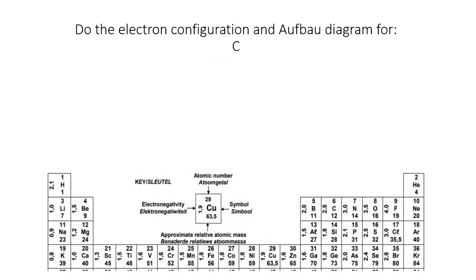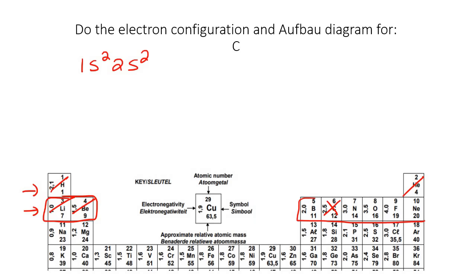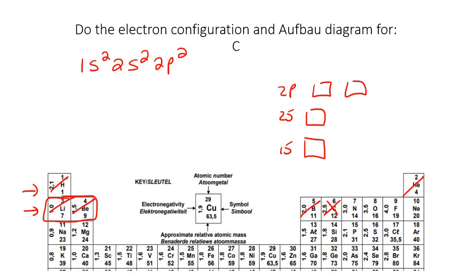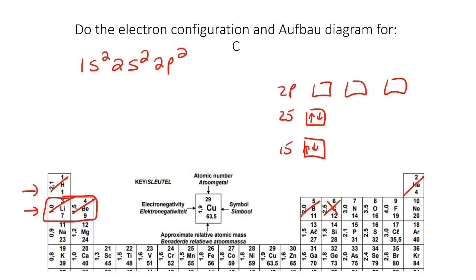Let's do another example — here we have carbon. So we're first going to do the electron configuration. You enter row one, that's the S block, and you do one, two over there. Then you enter into row two, where you enter the S block and you do one and two. Then you enter into the P block, where you do one and two. Now if we do the Aufbau diagram, you put your 1S, 2S, 2P — for P you always put three blocks. Now we're going to fill up twos. For the P, we only have two electrons, so you're not going to put them both into one block. You're going to put one at a time starting from the left — so one and one. And that's your two electrons. If you count all of these arrows, you'd see that there are six, and that's because there are six electrons in carbon.